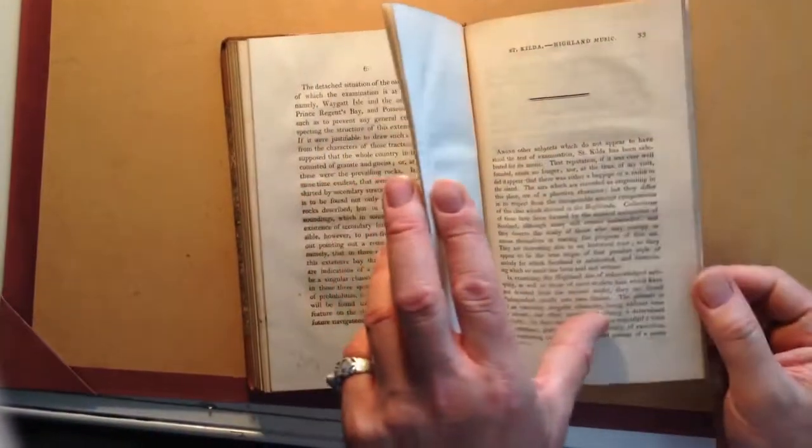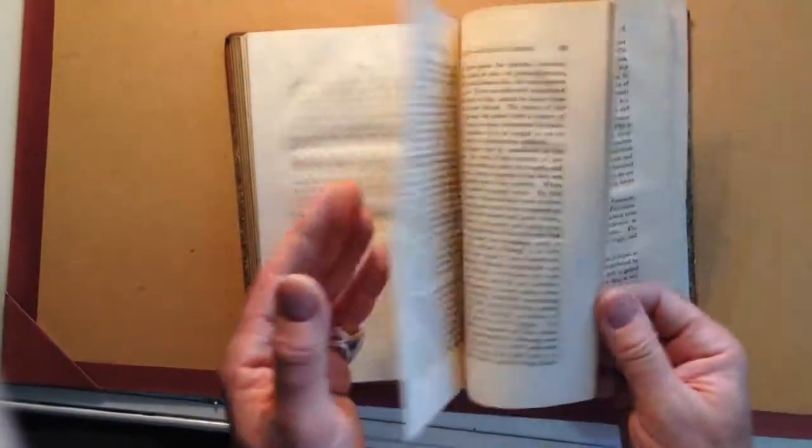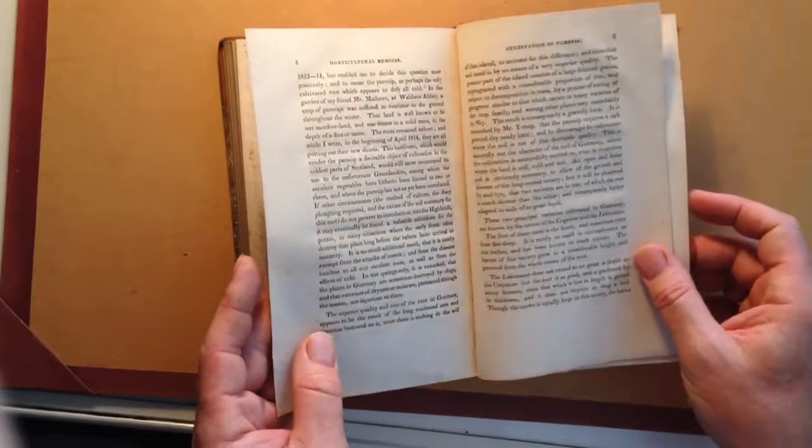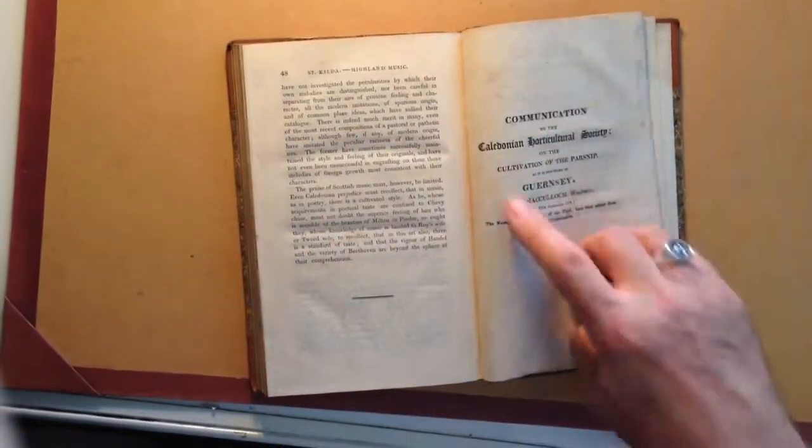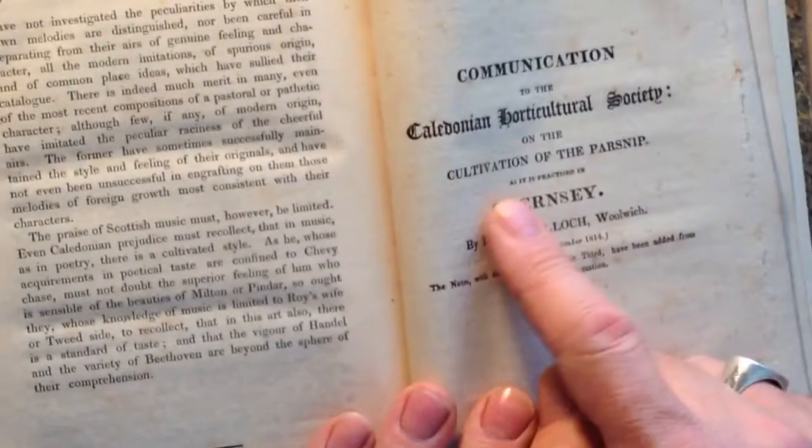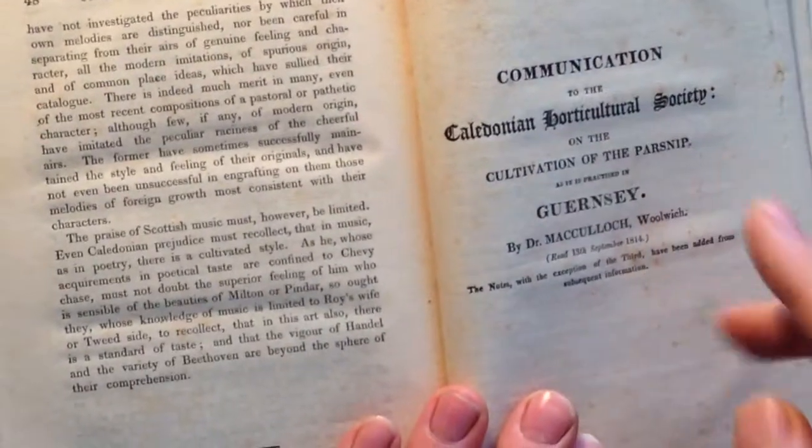There's a wonderful one on St. Kilda, Highland music on the Isle of St. Kilda. There's one on communications, a communication to the Caledonian Horticultural Society on the cultivation of the parsnip. So parsnip growing in Guernsey, very obscure.